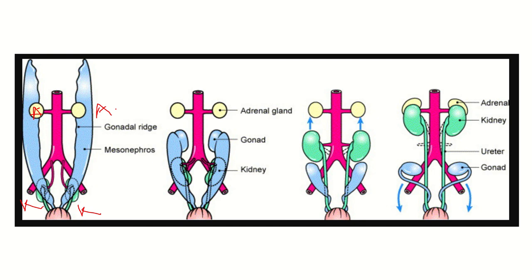The adrenal gland lies in its usual site on the posterior abdominal wall. In the second picture, we can see the kidney gradually ascending, while the adrenal gland remains in its own position. In the third picture, the kidney is moving upward and is now very close to its final position.